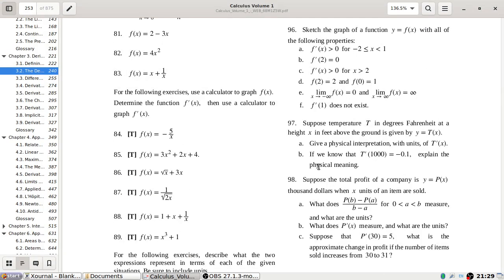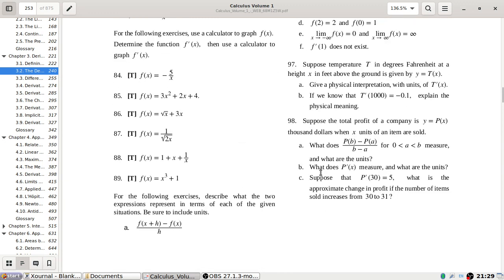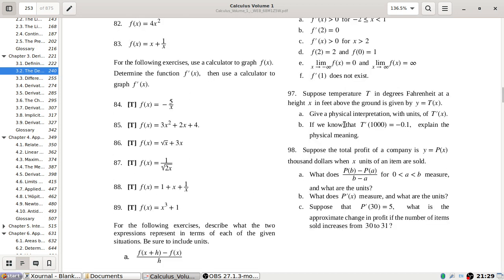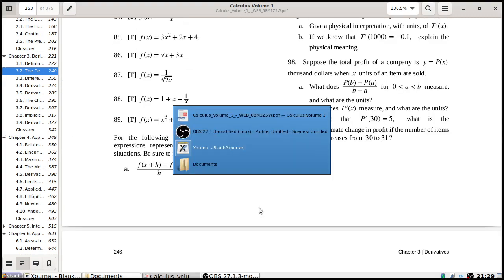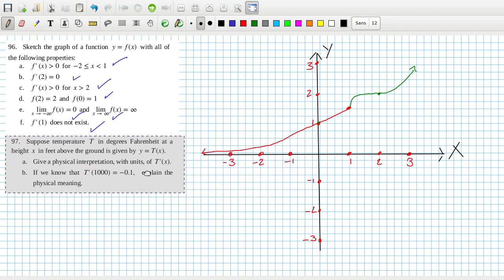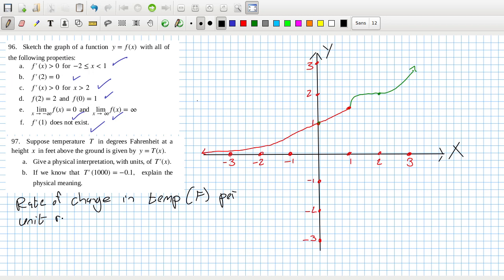I think maybe I'll leave it there. Well, maybe I'll just finish on with 97. So in 97, give a physical interpretation. So T is temperature in Fahrenheit, so it's the rate of change in the temperature in Fahrenheit per unit of distance above the ground, or if you maybe to be a little bit more clear, per unit rise in height, which is in feet.